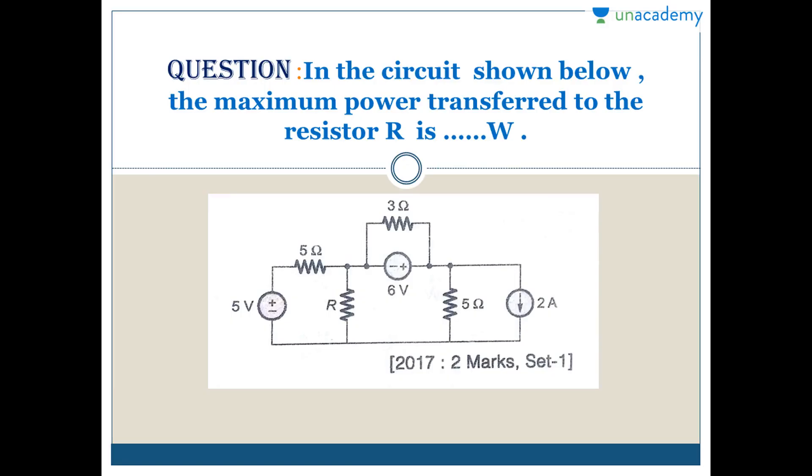Here we have a question. In the circuit shown below, this is a two-marks question asked in 2017 Set 1. The maximum power transferred to the resistor R - they are asking for the power across this resistor. So we have to find the maximum power to this resistor R.